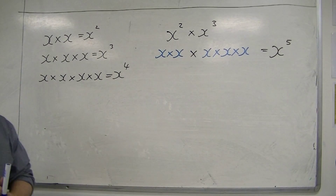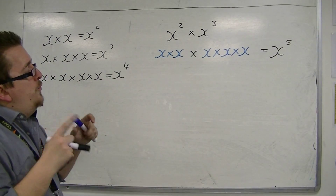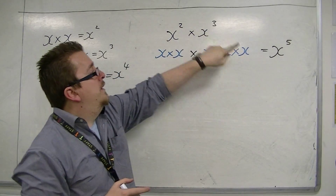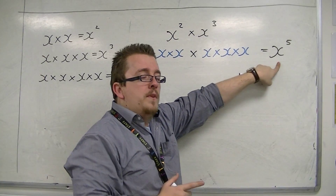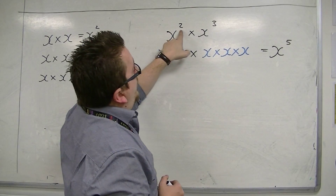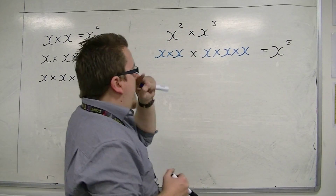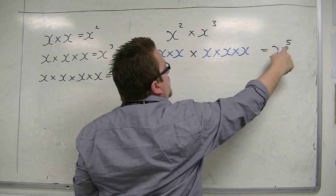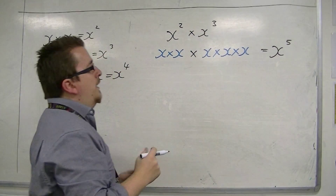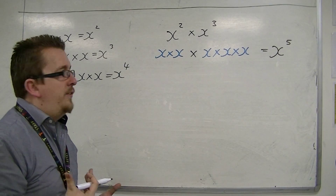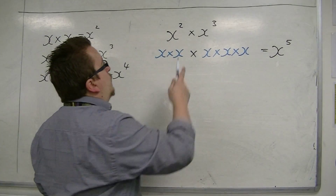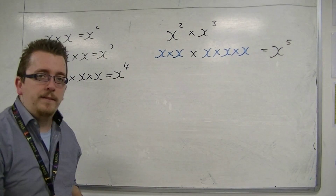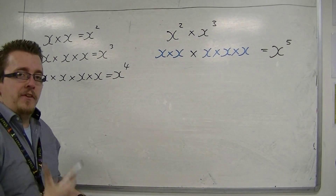What you want to notice is: how do I get from x squared times x cubed to x to the 5? Well, it's got to be something to do with those powers, 2 and 3. You should be able to notice that 2 plus 3 makes 5. So when you multiply things together where you've got the same base number — the same x, the same letter — then you can add the powers.